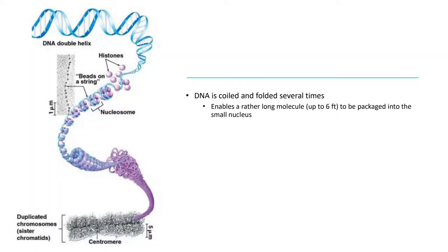DNA is really, really long and humongous, and it has to be coiled and folded several times. It enables a rather long molecule — up to six feet sometimes — to be packaged in the small nucleus. DNA is going to be packaged by being folded around proteins called histones. These proteins are for folding the DNA.